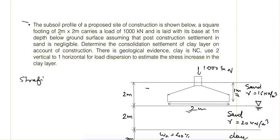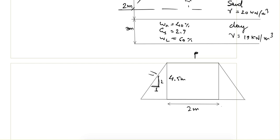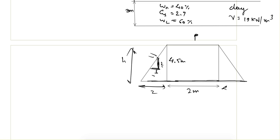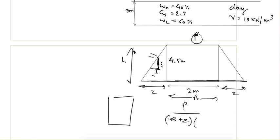When there is stratified soil and we know the stress at one point but want to calculate it at another level, we use the load dispersion technique. If the load is P at the top level and B is the footing width, L is the footing length, and z is the depth, then the stress at depth z is: delta sigma = P / ((B + z) × (L + z)).